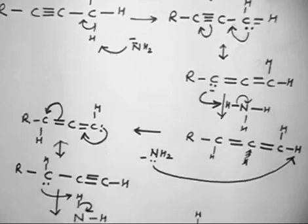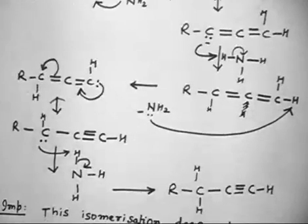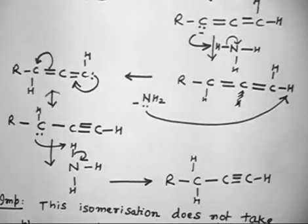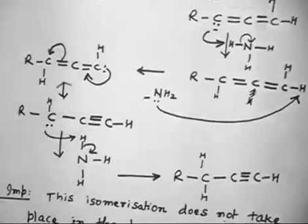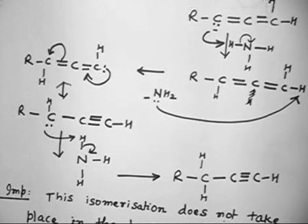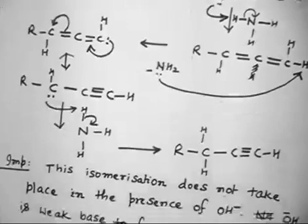If this carbanion takes H⁺ from ammonia, hydrogen becomes attached at the terminal carbon, and now this is converted into a terminal alkyne. So NH2⁻ can be used for isomerization of an alkyne — an internal alkyne can be converted into a terminal alkyne using NH2⁻.